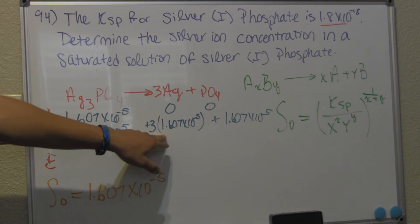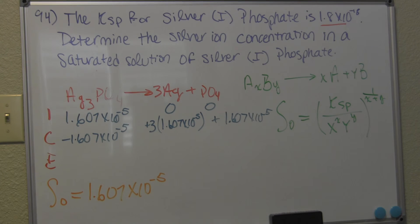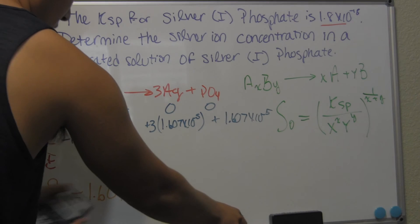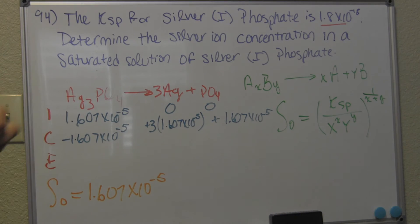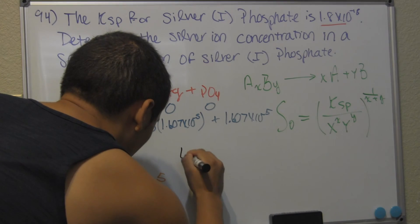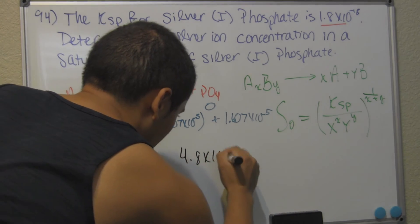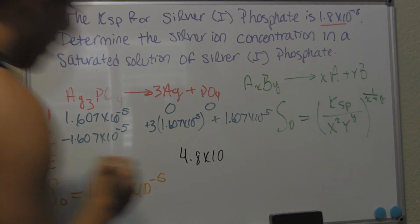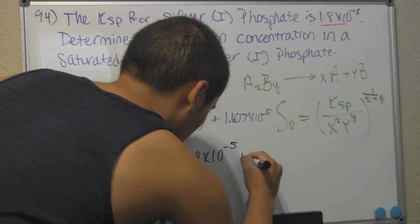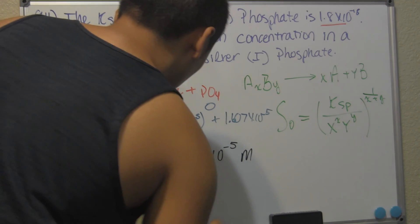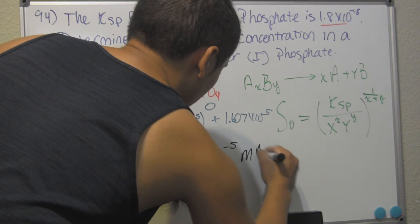So now we have this value right here. We can calculate the concentration, and you just get that, multiply it by 3, giving us a silver 1 concentration of, let me write it in black, just to contrast. Silver 1 concentration of 4.8 times 10 to the negative 5 molars of silver.